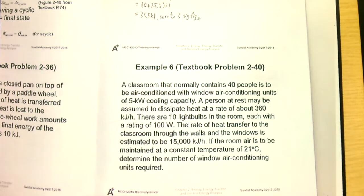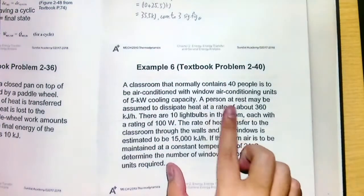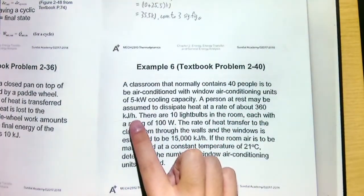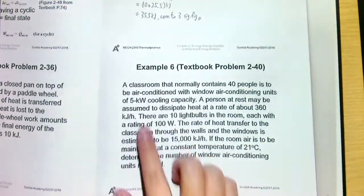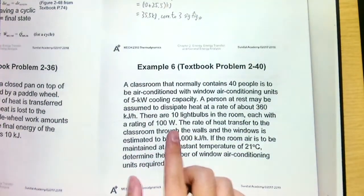Here there's a classroom that contains 40 people and it should be air conditioned. We need to install some air conditioning units with a window air conditioning unit of five kilowatt cooling capacity, meaning each air conditioning unit can take out five kilowatt of heat. A person at rest may be assumed to dissipate heat at a rate of about 360 kilojoule per hour.